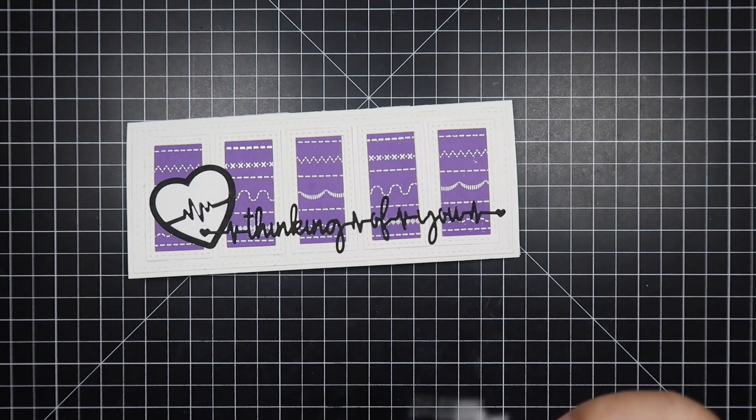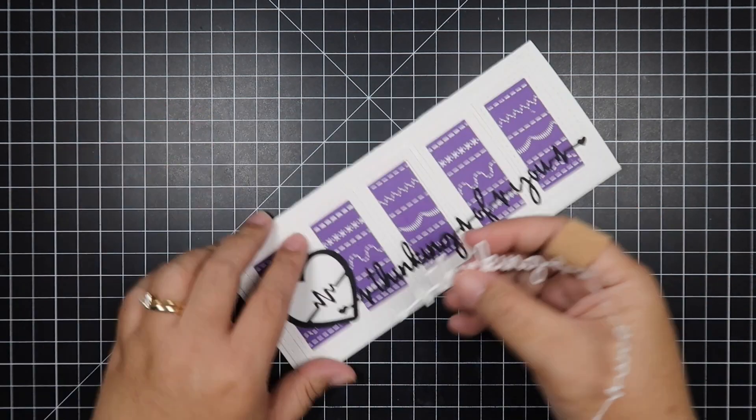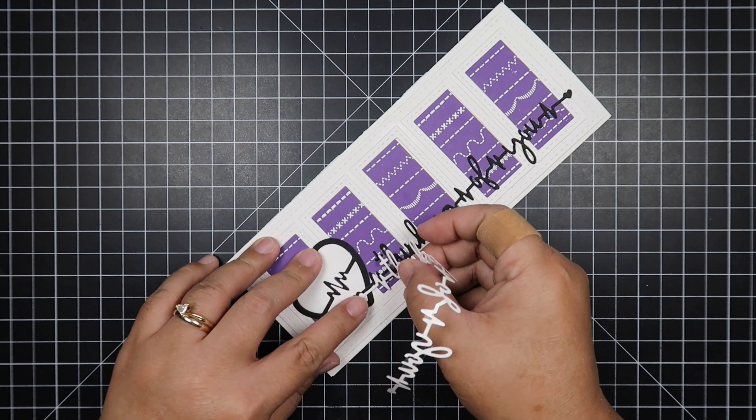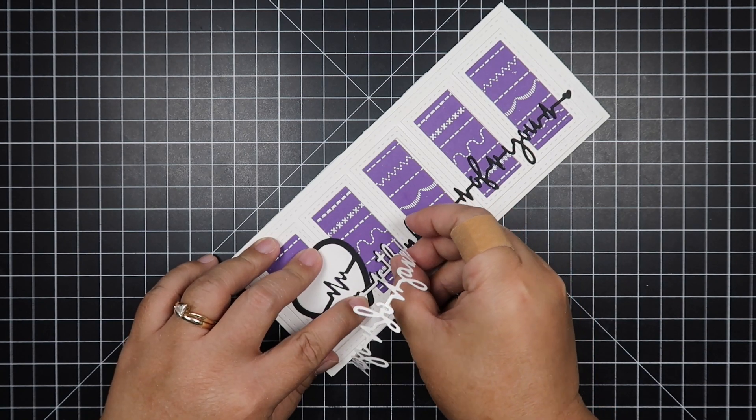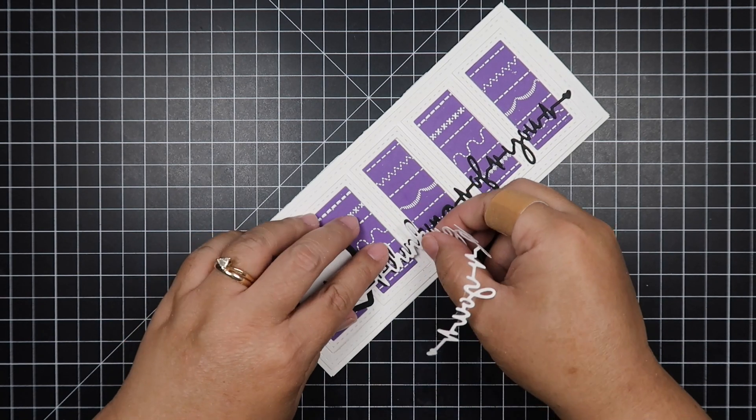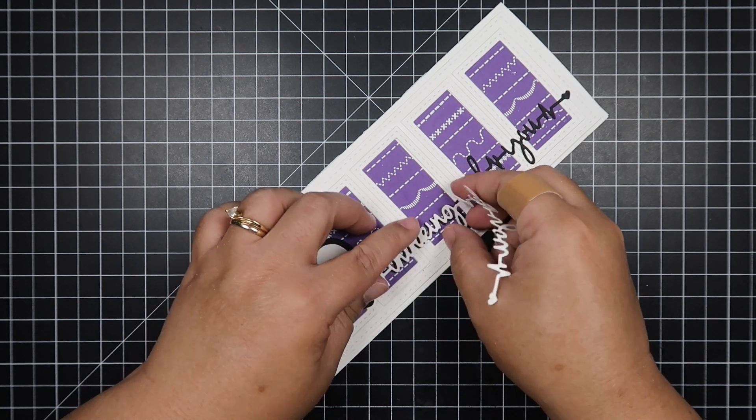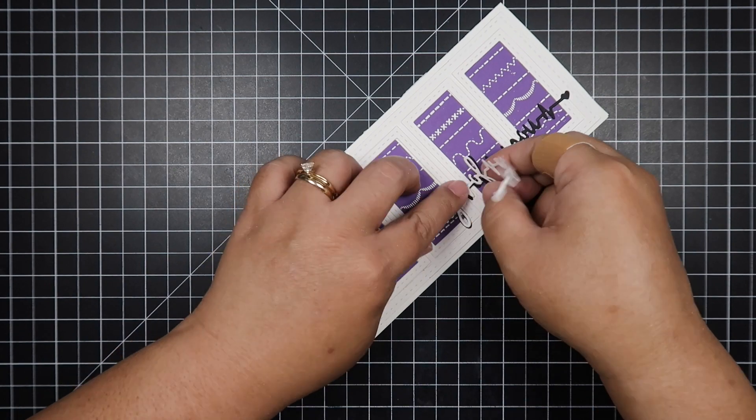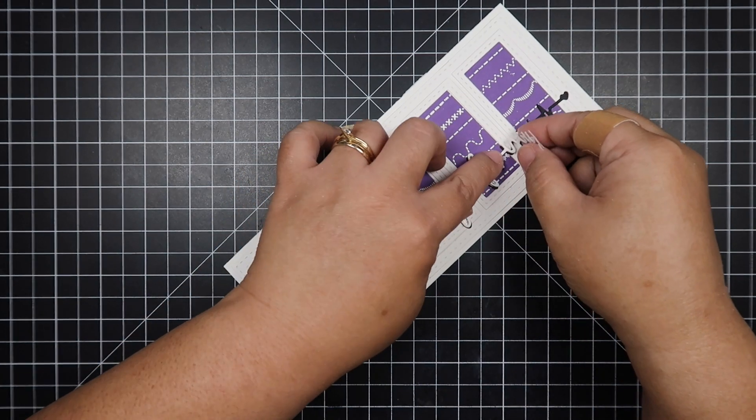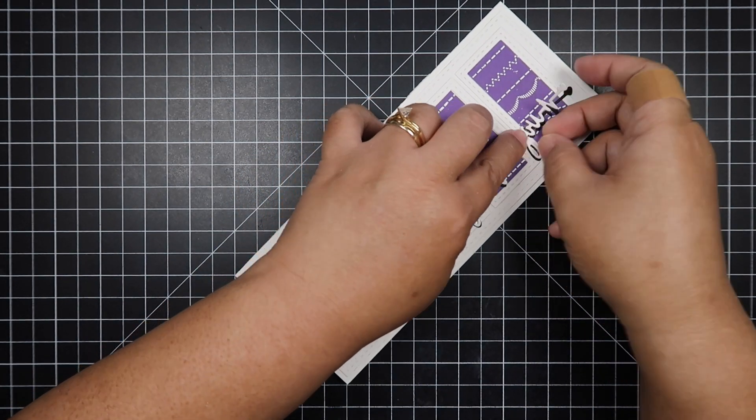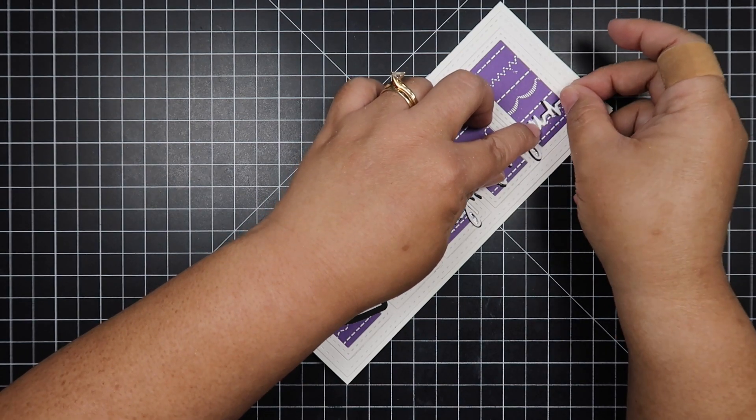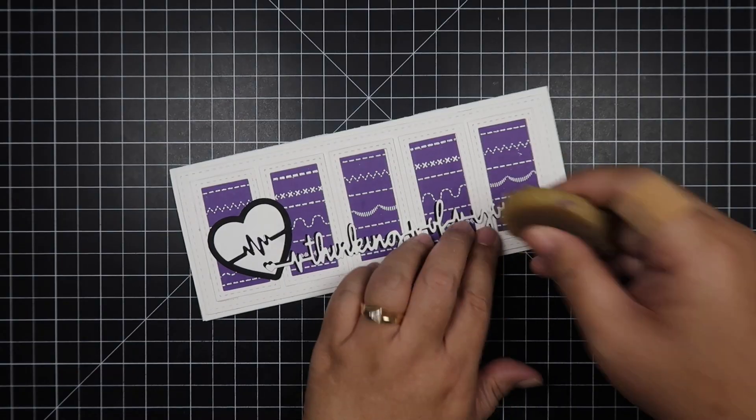Now let's peel off our white 'thinking of you' word die. Again, I'm being very, very careful here. You can also use glue to adhere this, but for myself, my preference is to use this sticker machine because it just makes it so much easier.